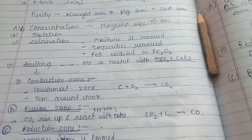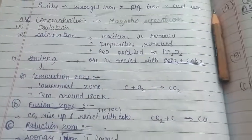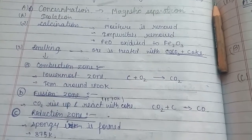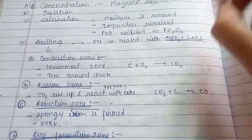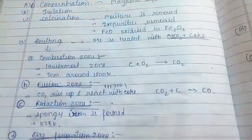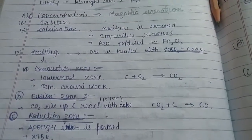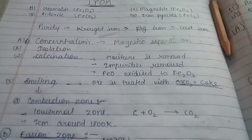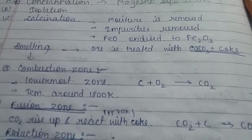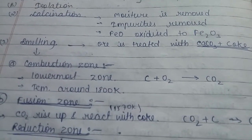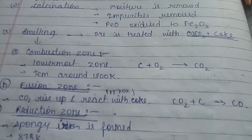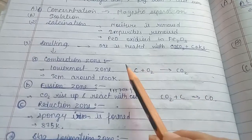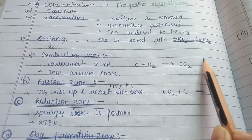After magnetic separation, we perform isolation. In isolation, there are two processes: first, conversion into oxide, and second, reduction. The first process of isolation is calcination — heating in the absence of air. During calcination, moisture is removed, impurities are removed, and ferrous oxide is oxidized into ferric oxide. After that, smelting is done, where the ore is treated with CaCO₃ and coke.